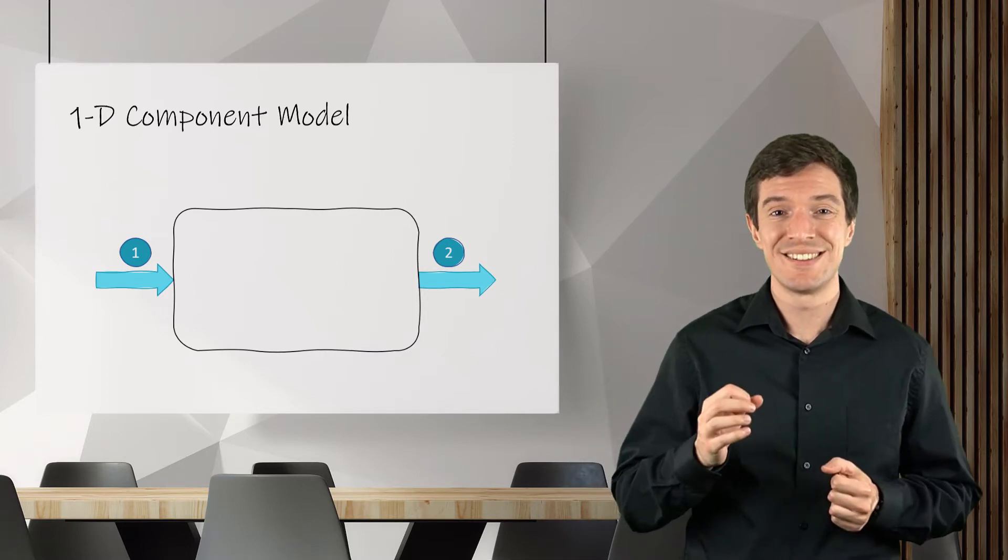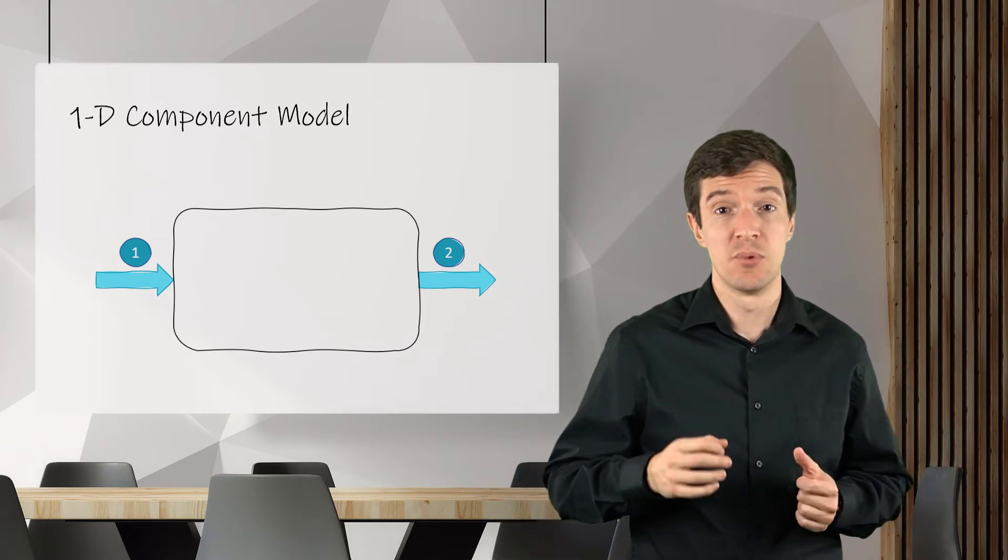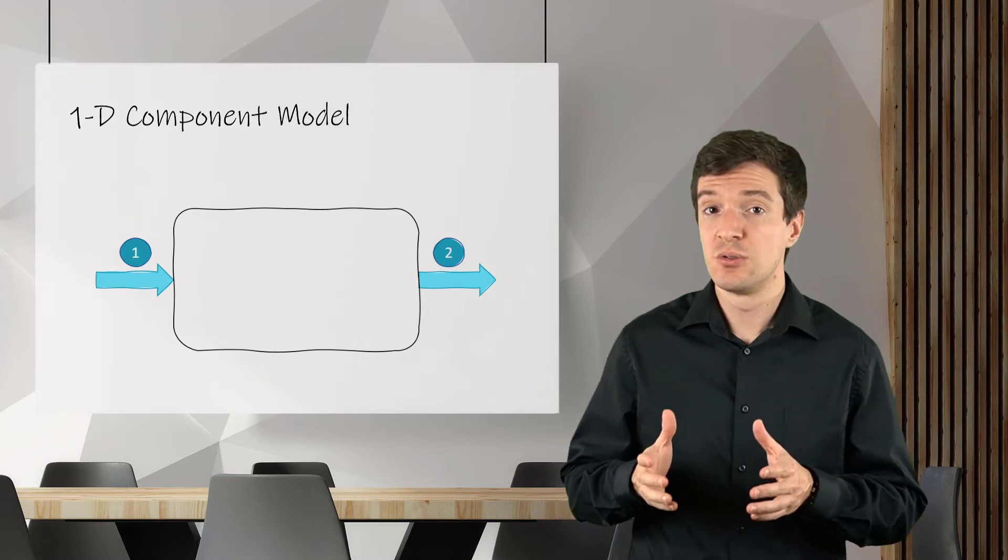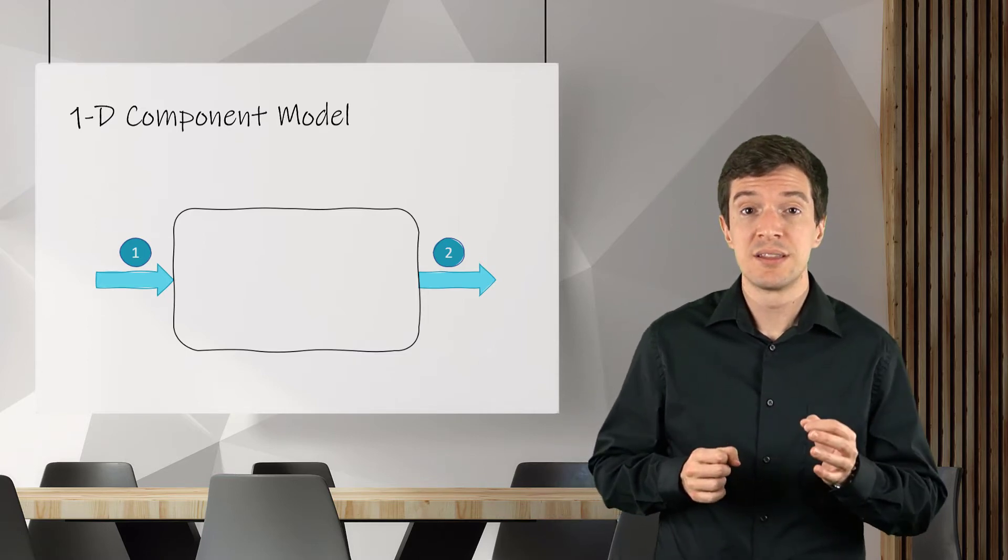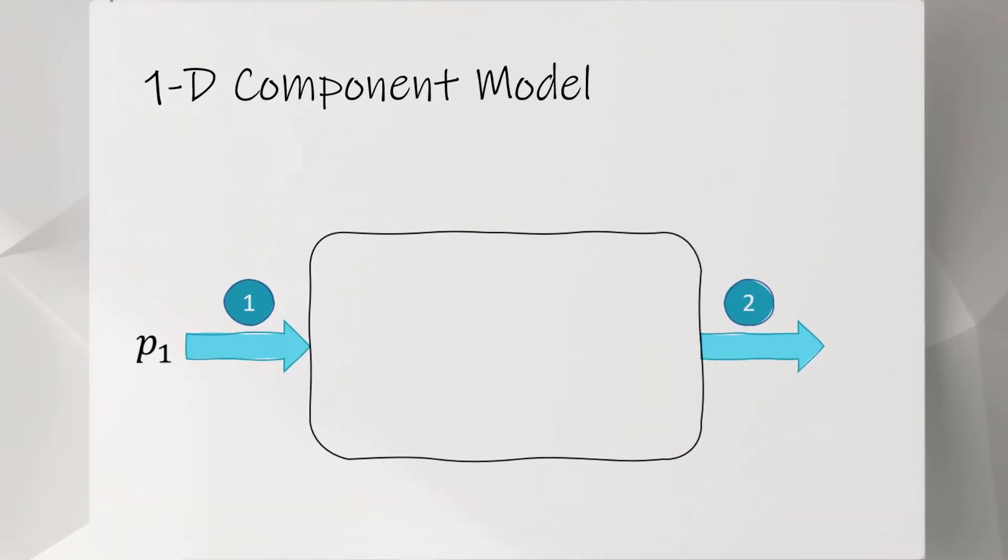In this way, each part is treated like a black box in a 1D system model. Once we have the experimental or numerical data to build the empirical relations, we can quickly estimate the pressure drop based on the geometry of the component.